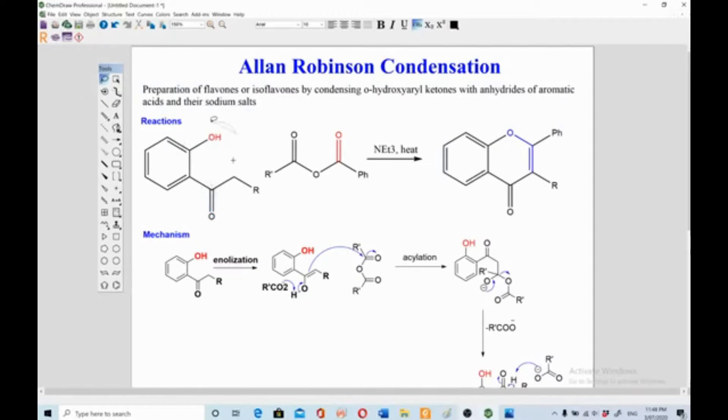This R prime could be anything like cyclic or long chain of carbons or anything, and Ph is phenyl. This reaction takes place in the presence of a base, triethylamine, and heat, and you get the product.